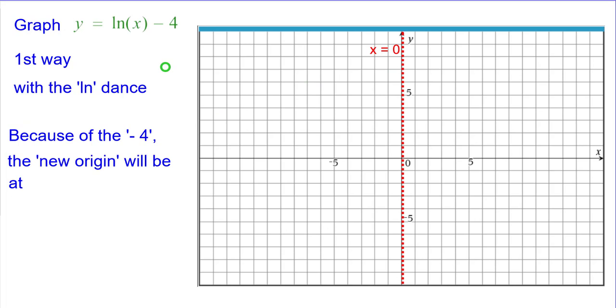Because of the minus 4, the new origin, we'll call it, will be at (0, -4) and so we'll plot that in orange. Points will be plotted relative to this new origin.